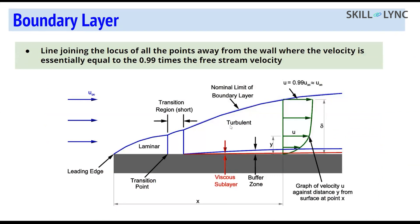The last fundamental concept is the boundary layer. Whenever fluid comes in contact with a solid surface, friction is created due to the motion of the fluid - a viscous effect. The boundary layer is essentially the locus of all points away from the wall where velocity equals the free stream velocity, or approximately 99% of it. Within the boundary layer, viscous forces dominate over inertial forces. Away from the wall, you don't see the viscous effect.